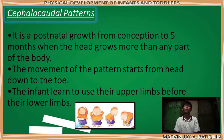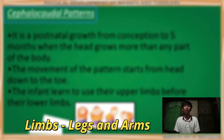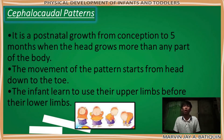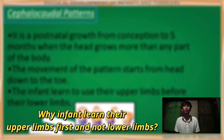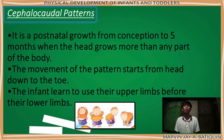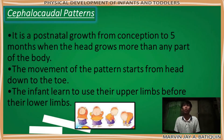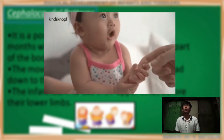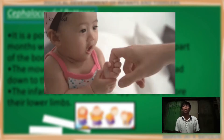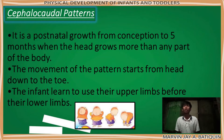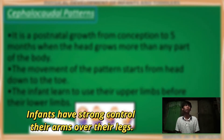The infant learns to use their upper limbs before their lower limbs. Limbs means legs or arms of a human — upper limbs represent the arms and lower limbs represent the legs. Why do infants use their upper limbs first and not the lower limbs? As stated earlier, infants are babies that cannot walk. They are usually lying on their bed; they don't know how to stand and balance. Their lower limbs are just starting to move. Essentially, they use their upper limbs — the arms — by grasping and sucking things using their hands. In other words, infants have stronger control of their arms than their legs.